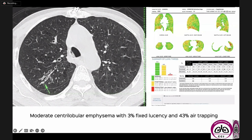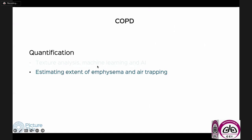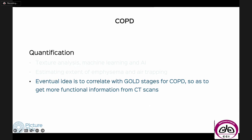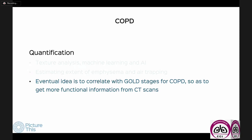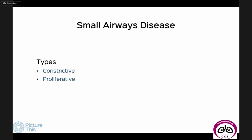One new development is quantification — we're now able to quantify the extent of emphysema and air trapping. In a patient with moderate centrilobular emphysema, we can report three percent fixed lucency and 43 percent air trapping, which is supposed to correlate with GOLD stages for COPD. However, we still need more data to make this routine — we'll only do so when we can prove quantification affects management and prognosis. Small airways disease involves the distal airways in two forms: constrictive and proliferative.